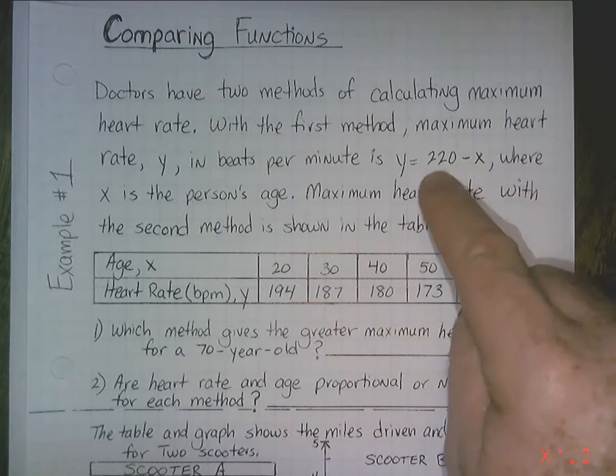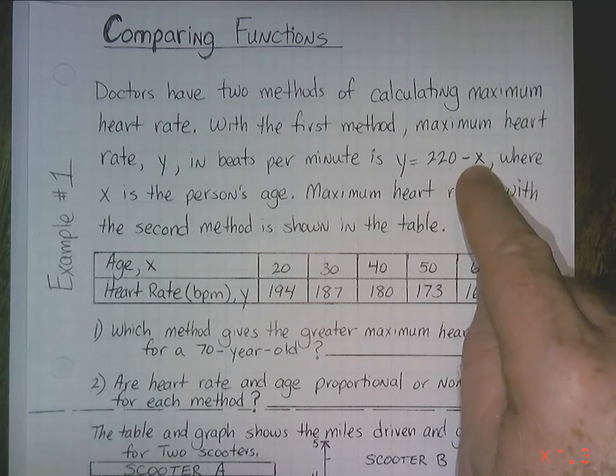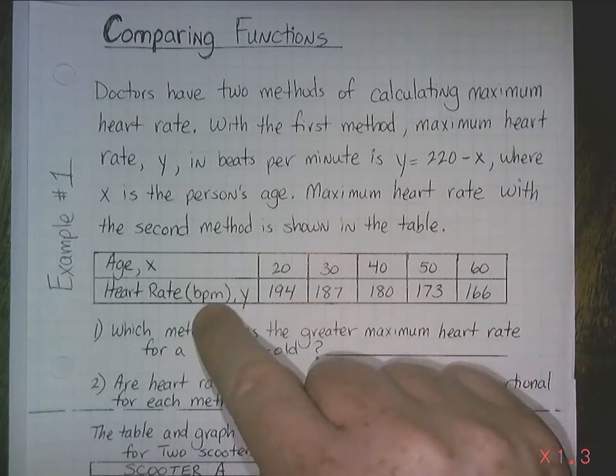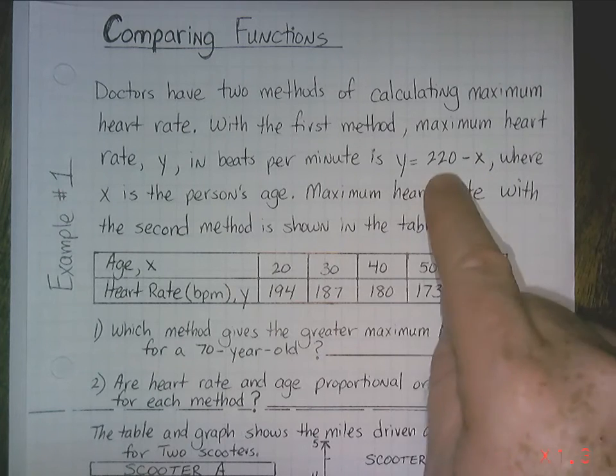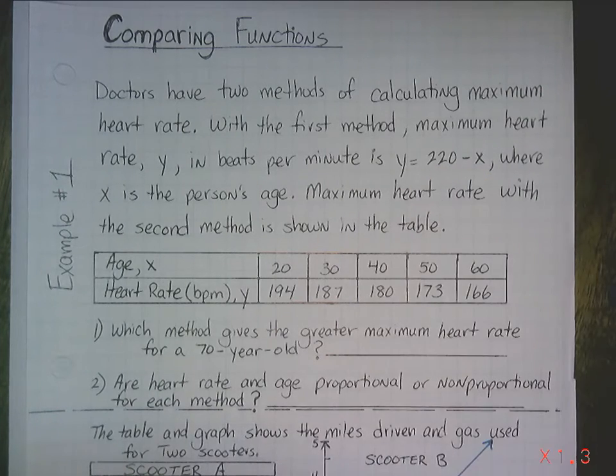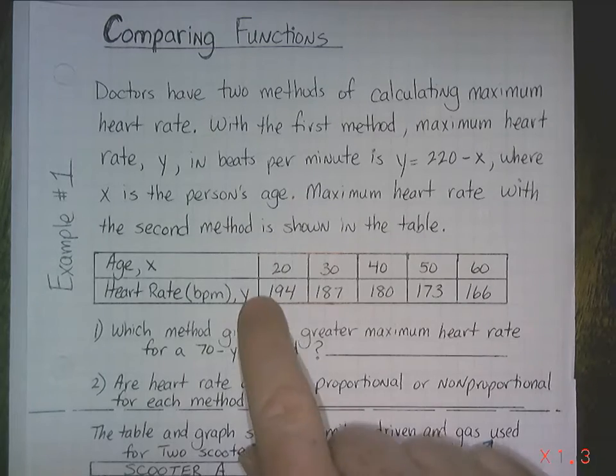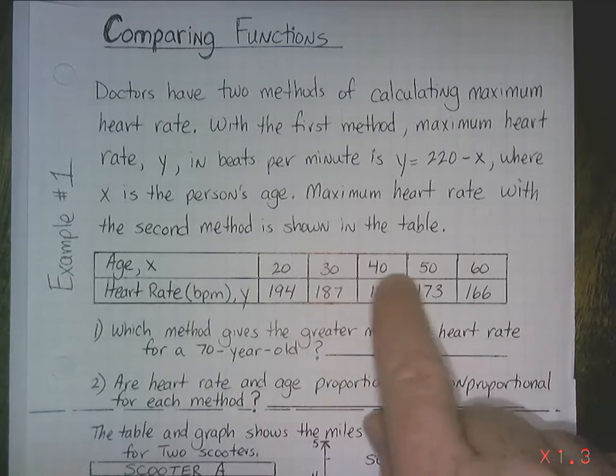If you're a 20-year-old, your maximum heart rate, or heart beats per minute, would be 200. So that's one method. The other method is using this chart here. So this chart here is, you just basically define your age.